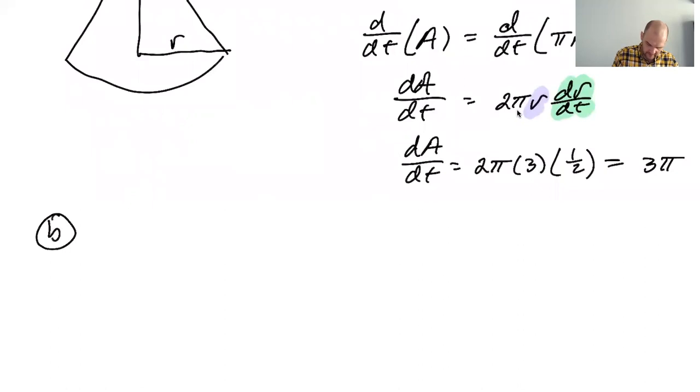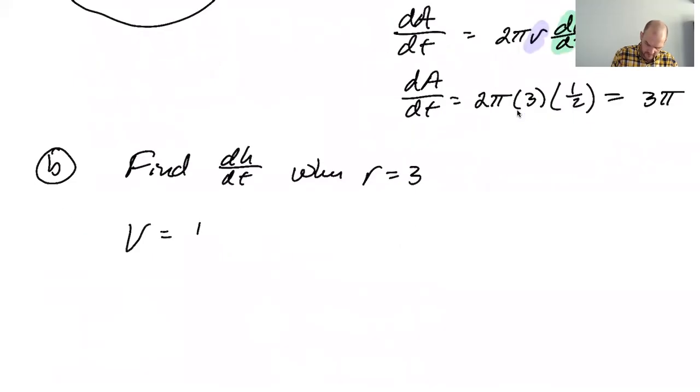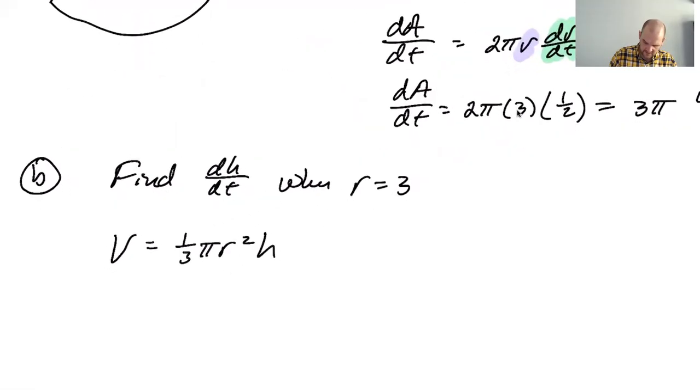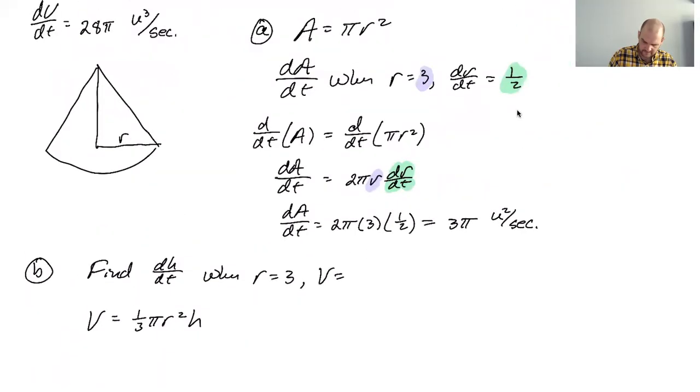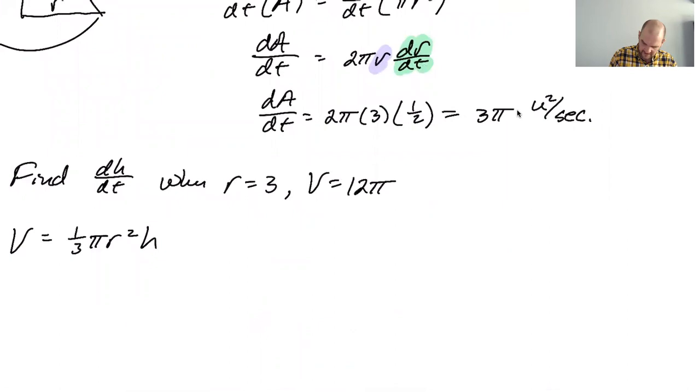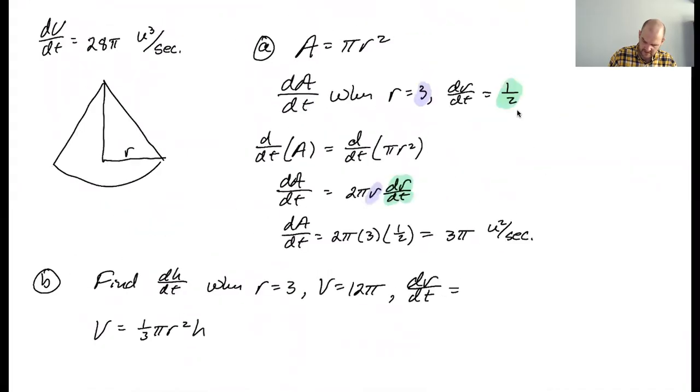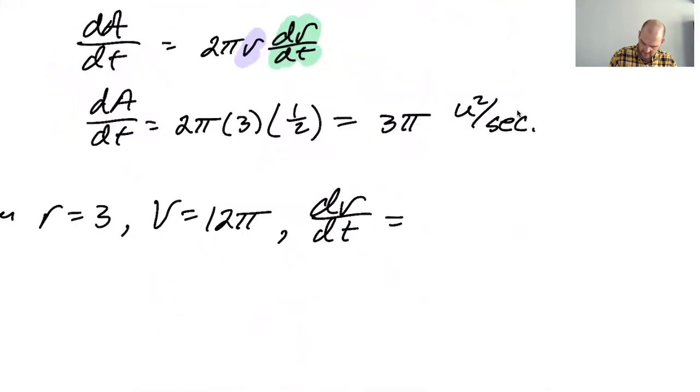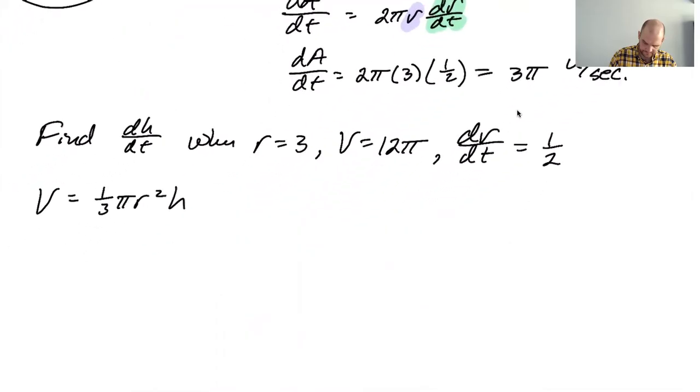So B, we're looking for, we're trying to find dH/dt when r equals three. Okay, and the volume is one third pi r squared h. Now let's think what else we know. When r is three, we know that the volume is something, is 12 pi. So I could use that if I need to find h.